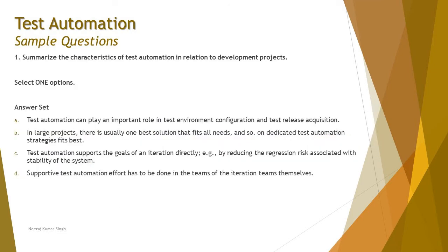The very first question comes from chapter 3 with respect to development projects — that is, summarize the characteristics of test automation in relation to the development projects. We are talking about the characteristics of test automation, which is a basic thing we learned, but let's understand how the options will be framed.